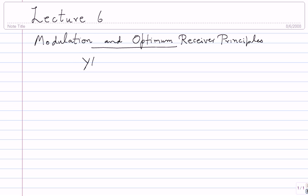So how do you go from a waveform channel — which is Y(t) = X(t) + N(t) — to a vector description? I have slowly moved to capital letter notation because each of these things are random processes. So to be consistent, I'll use capital letters, and that's my notation for this waveform channel.